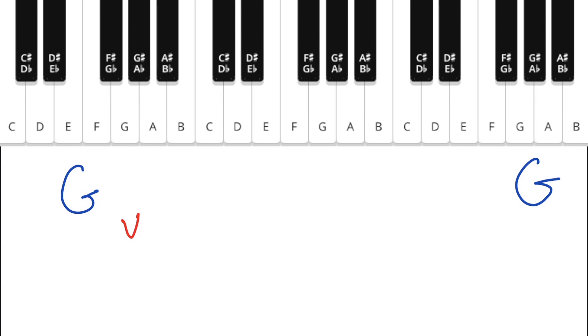And we also know that the intervals are going to be whole, whole, half, whole, whole, whole, half. So now looking at the piano, let's see if we can figure out what all the notes of the G major scale are.